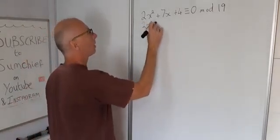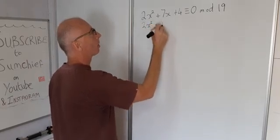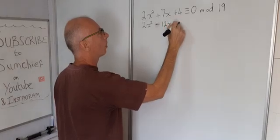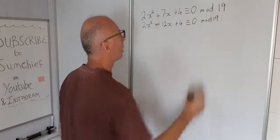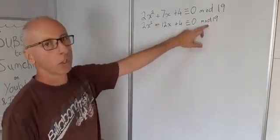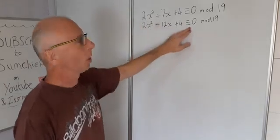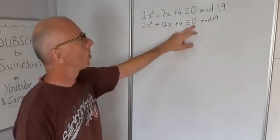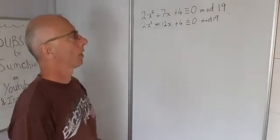2x² - 12x + 4 ≡ 0 mod 19. And as we're working in modular form we haven't changed any of this—it's still congruent to zero mod 19.